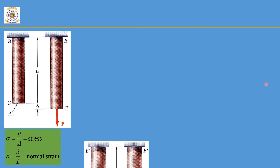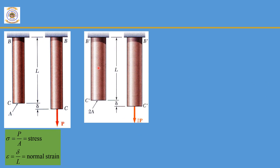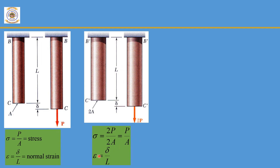In the second case study, we consider a beam with cross-sectional area 2A with an applied load of 2P. Stress equals load divided by area, which is 2P divided by 2A; the 2s cancel, so sigma equals P divided by A. For strain, change in length is delta and original length is L, therefore epsilon equals delta divided by L.